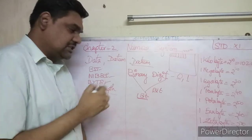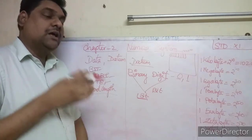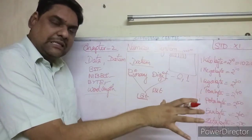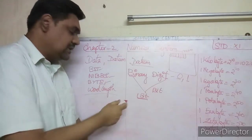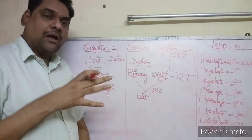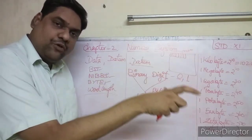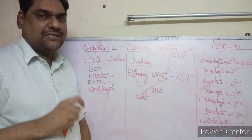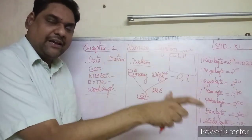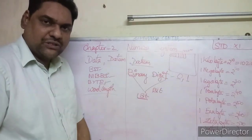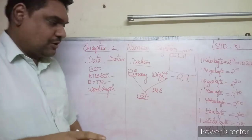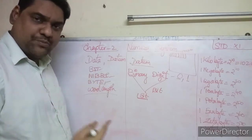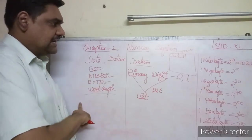Word length refers to the number of bits that can be taken from memory by the RAM for processing at one time. That is called word length — it could be 8 bits, 16 bits, or 32 bits.